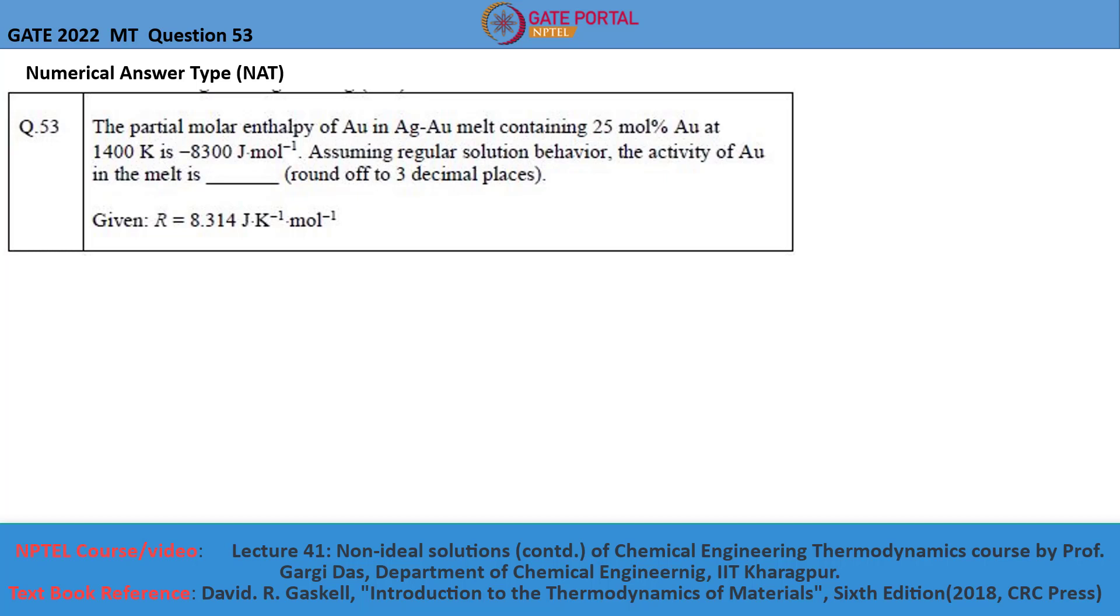The partial molar enthalpy of AU, that is gold, in silver-gold melt containing 25 mole percent gold at 1400 Kelvin is minus 8300 joules per mole. Assuming regular solution behavior, the activity of AU in the melt is to be found.